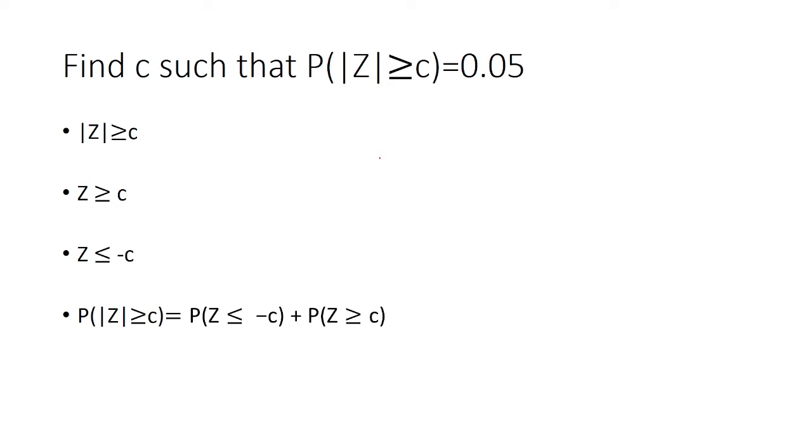Z is a normal distribution with mean 0 and standard deviation 1, so it's symmetric at 0. The probability Z ≥ c is this area, and P(Z ≤ -c) is this area. Because of symmetry, these two areas are equal, so we have two times P(Z ≥ c).